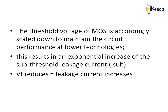The threshold voltage of your device is scaled down accordingly to maintain circuit performance at lower technologies. When I reduce the size of my device, the size of memory cells is also reduced, and my threshold voltage is also reducing. But when the threshold voltage of the MOSFET is reducing, it contributes to an exponential increase in sub-threshold leakage current — if I reduce my VT, my leakage current increases exponentially. When I scale down my memory, even the threshold voltage of my MOSFETs is reduced, causing leakage current to increase exponentially.